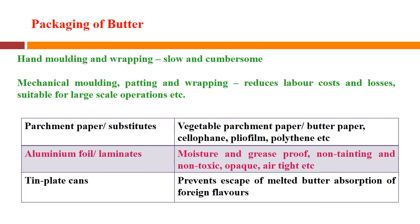When working is over, hand molding and wrapping can be done but it is slow and cumbersome. Mechanical molding, patting and wrapping reduces labor cost and losses, suitable for large-scale operation. Common packaging materials include parchment paper or its substitutes like vegetable parchment paper, cellophane, plyofilm, or polyethylene. Aluminum foil or laminates are becoming more common — they are moisture and grease proof, non-tainting, non-toxic, opaque and airtight. Tin plate cans are also used and prevent escape of melted butter and absorption of foreign flavors.